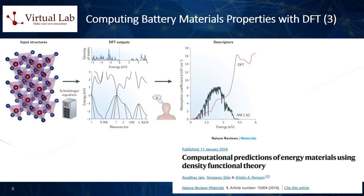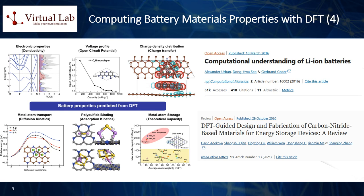Fifth, designing new materials: perhaps most excitingly, DFT can be used to predict the properties of new materials before they are synthesized in the lab. This can save significant time and resources in the search for better battery materials. It's important to note, however, that while DFT is a very useful tool, it is not perfect. For example, it often struggles to accurately predict properties related to electron correlation, such as dispersion forces or the energy of charge transfer states. Researchers often use more advanced techniques, such as hybrid functionals or many-body perturbation theory, to address these challenges.